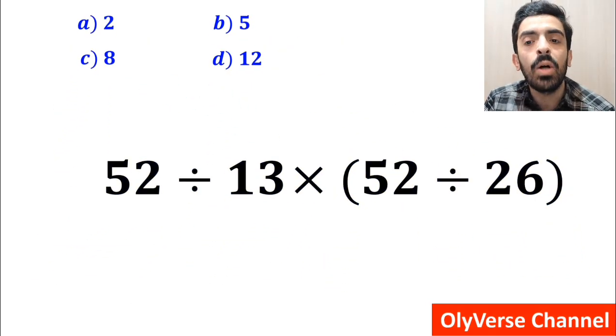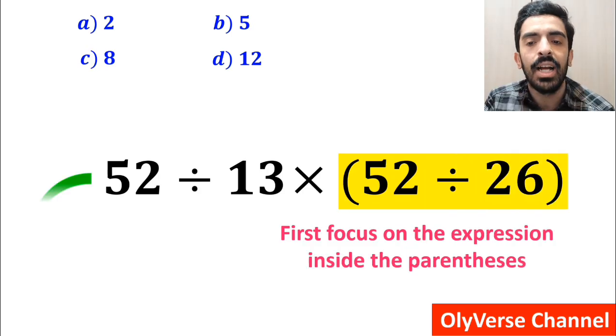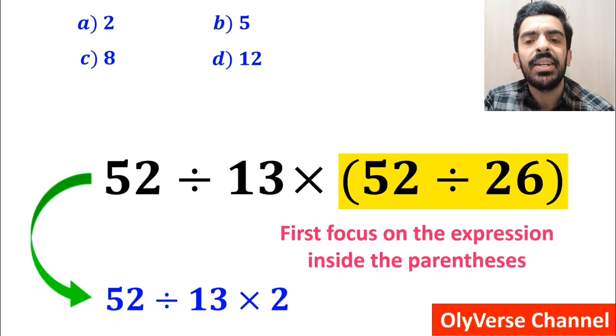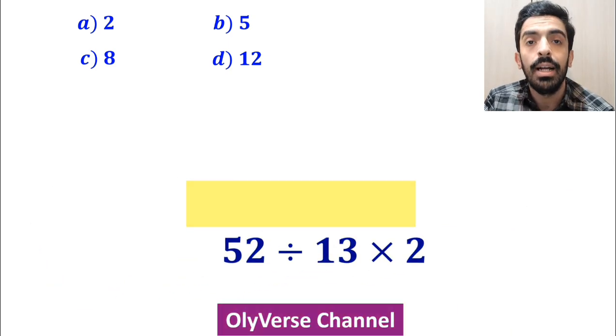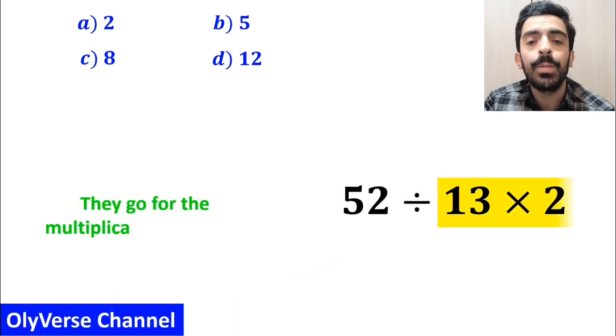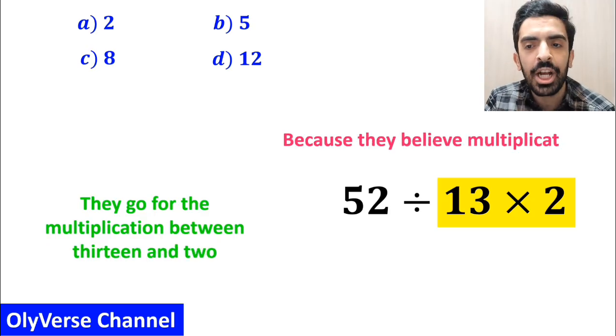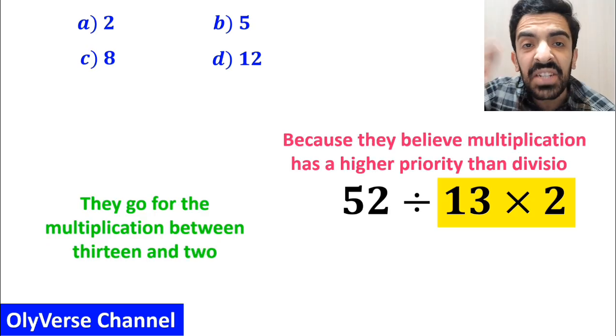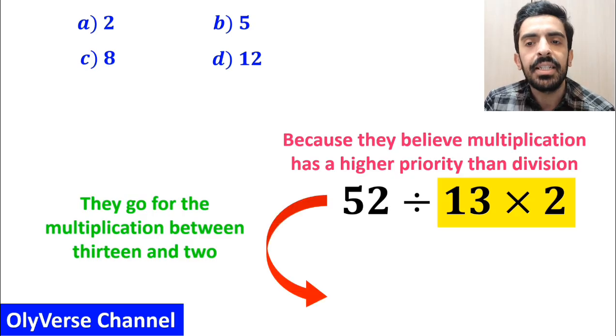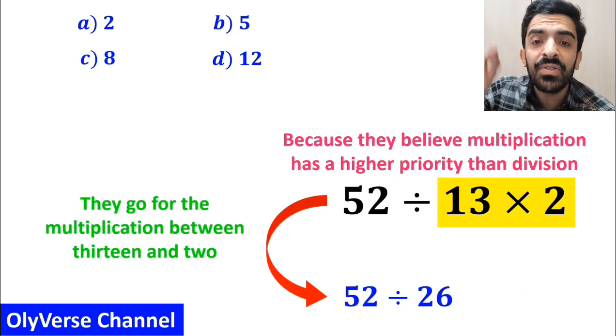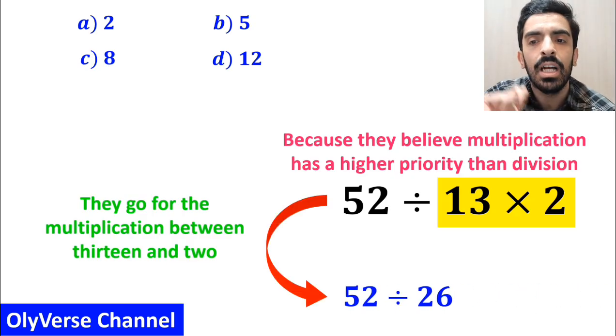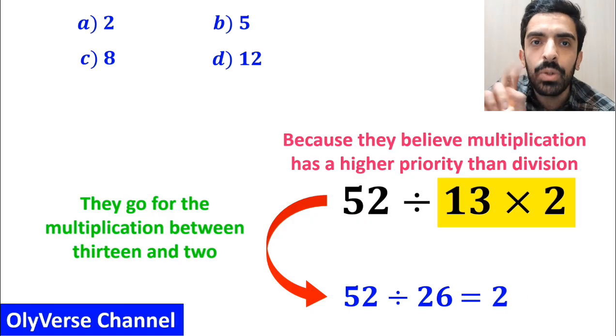Many people when starting to solve this question first focus on the expression inside the parenthesis and instead of considering the whole expression, they rewrite it as 52 divided by 13 multiplied by 2. In the next step, they go for the multiplication between 13 and 2 because they believe multiplication has a higher priority than division. So, they simplify this expression and rewrite it as 52 divided by 26 which finally gives them the answer 2.